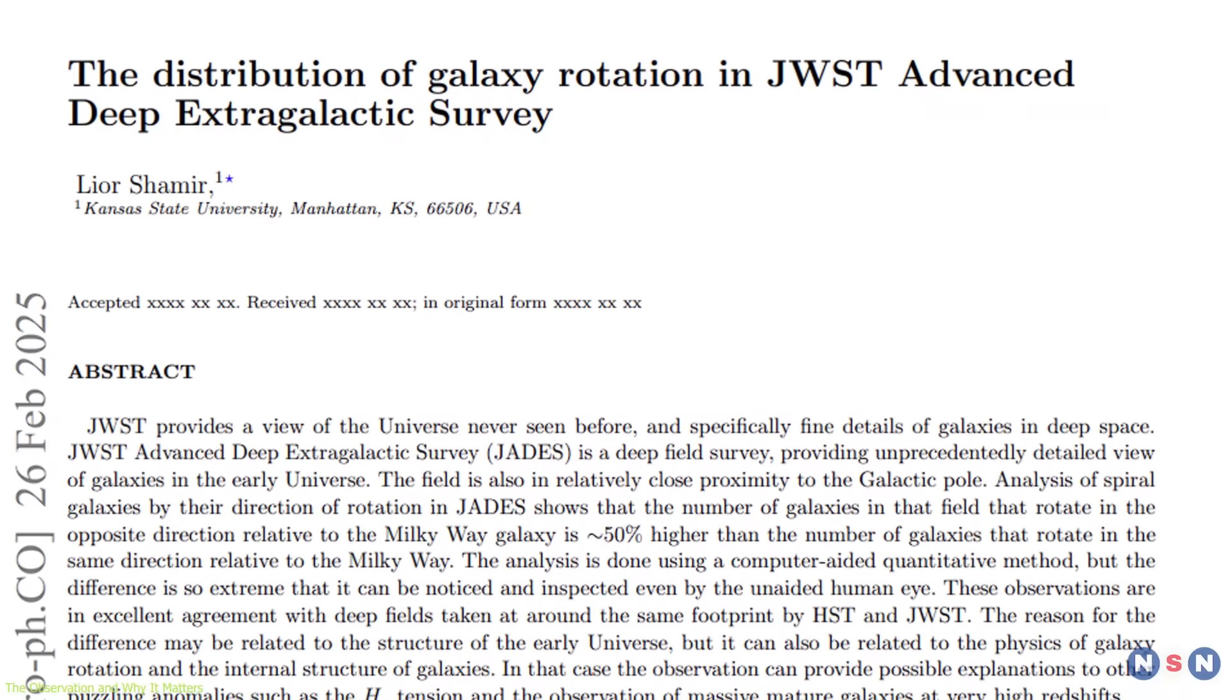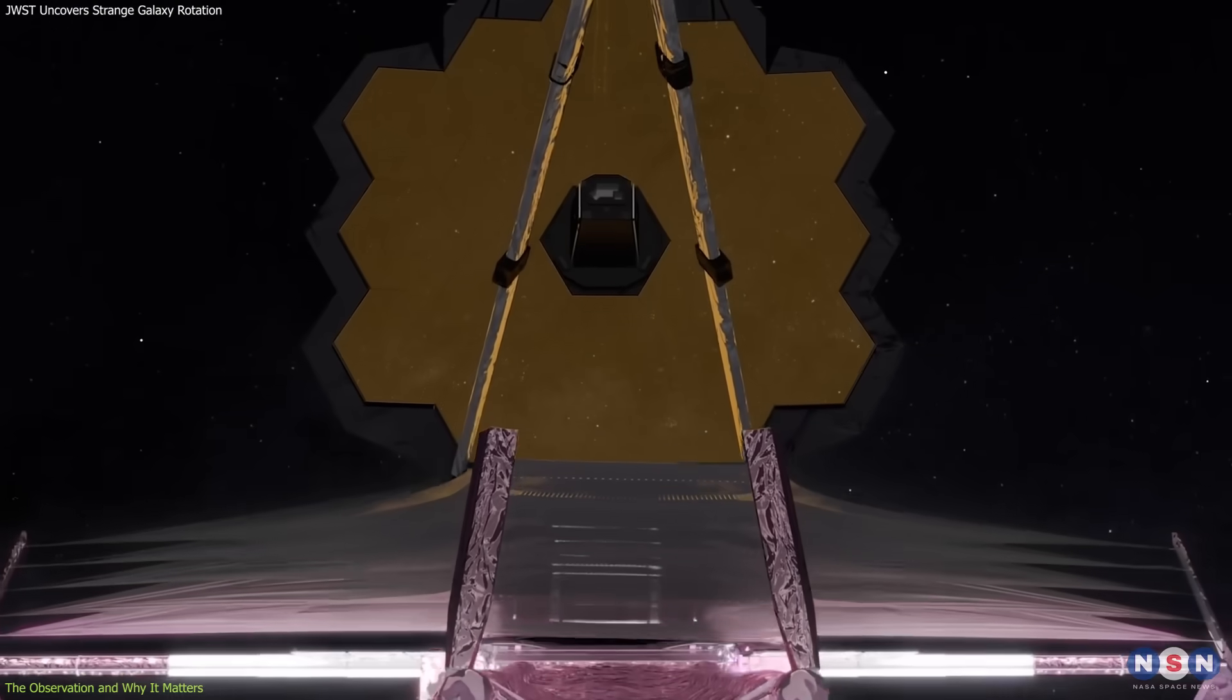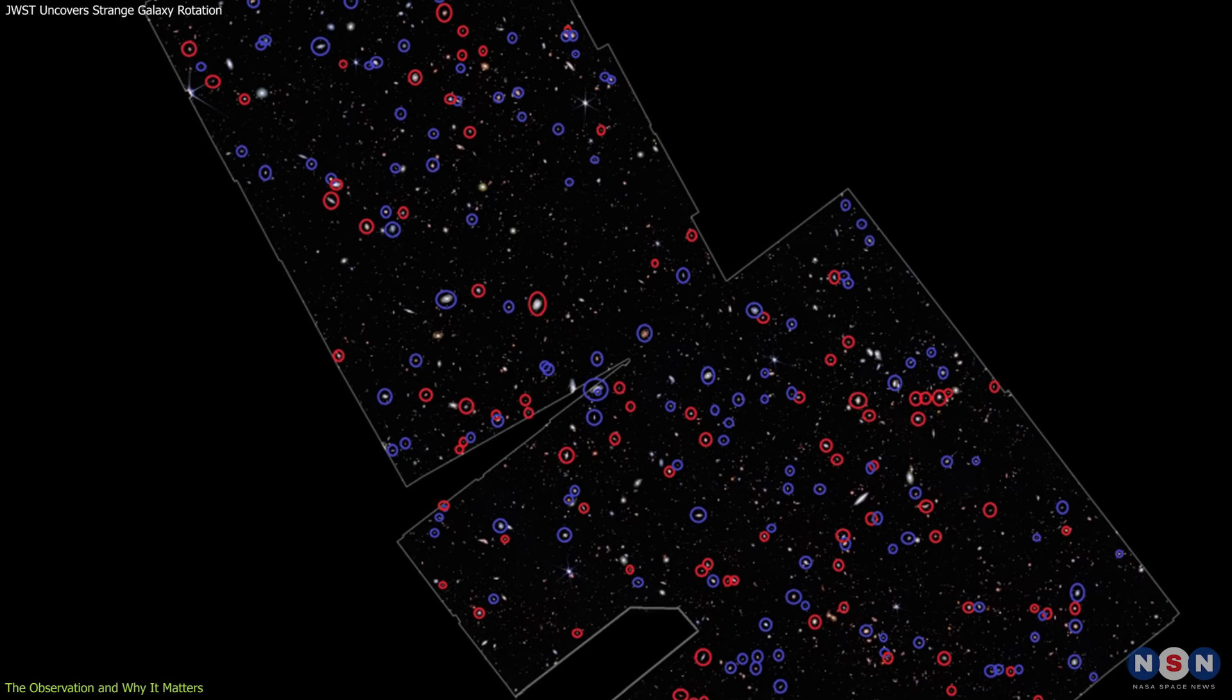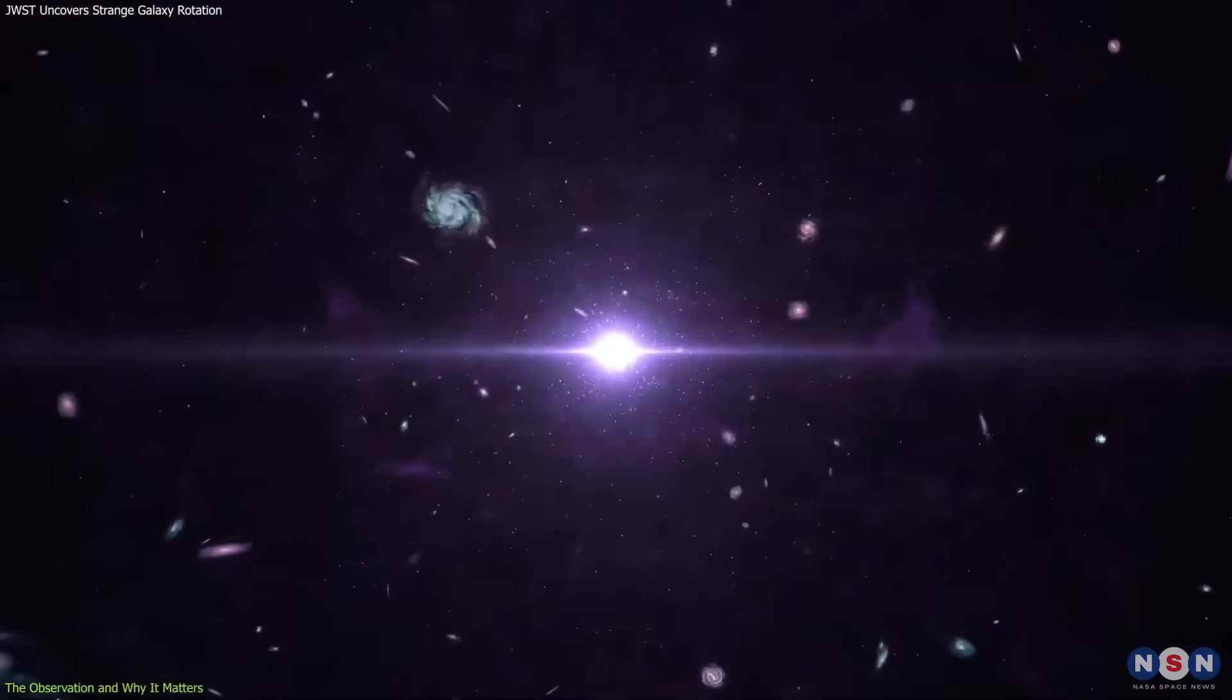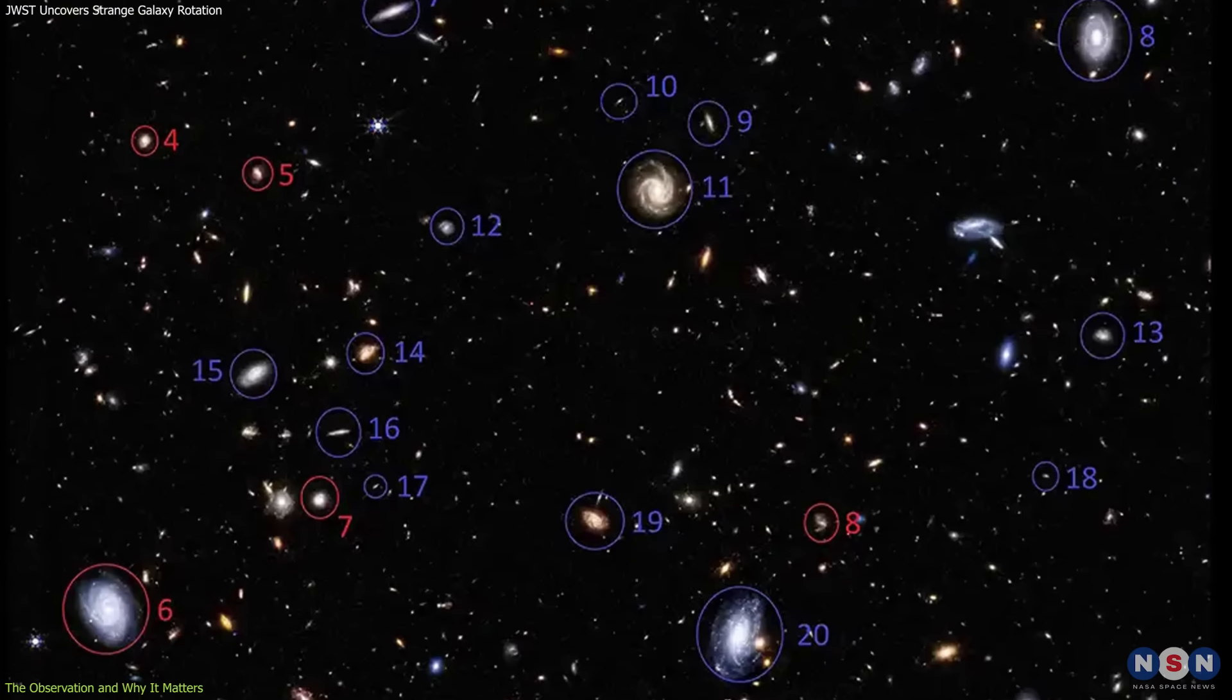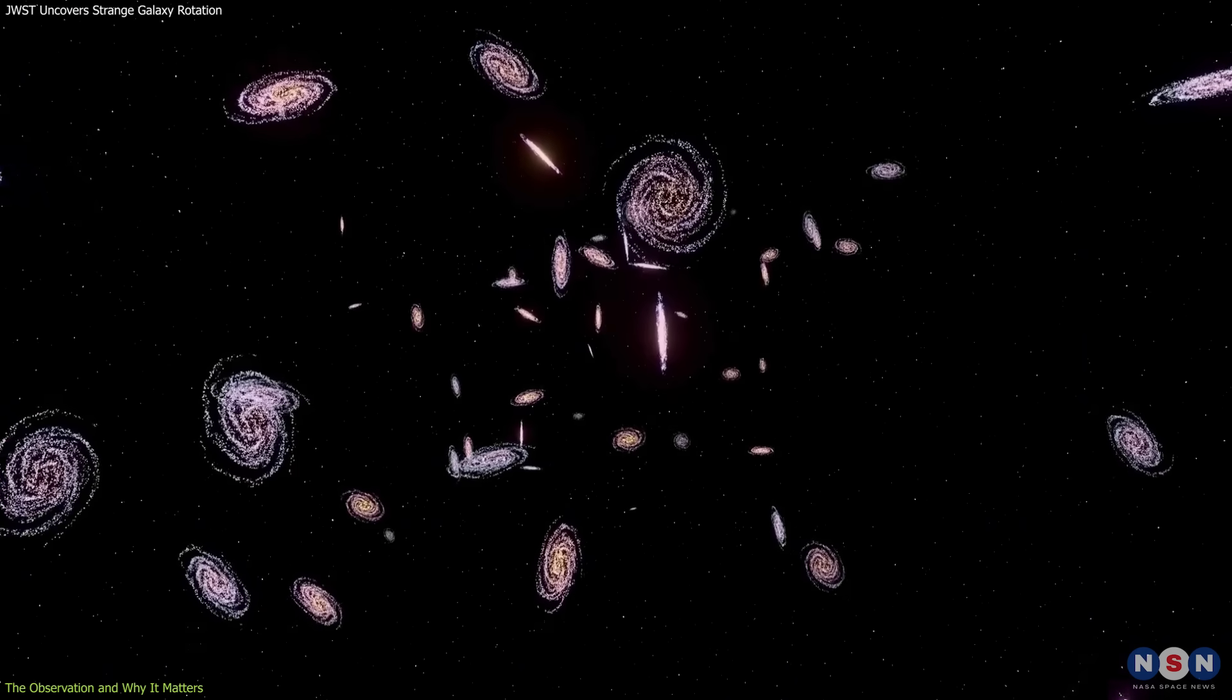In a recent study led by researchers at Kansas State University, data from the James Webb Space Telescope were used to examine 263 ancient galaxies formed roughly 300 million years after the Big Bang. These galaxies were part of a deep sky survey that allowed astronomers to measure, among other things, the direction of their spin.